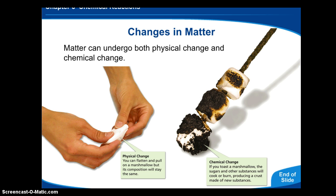We have different changes in matter, so again we can have something undergo a physical and a chemical change. A marshmallow can be flattened out and just changing the shape of it, but then the chemical change would be if we toasted that marshmallow.